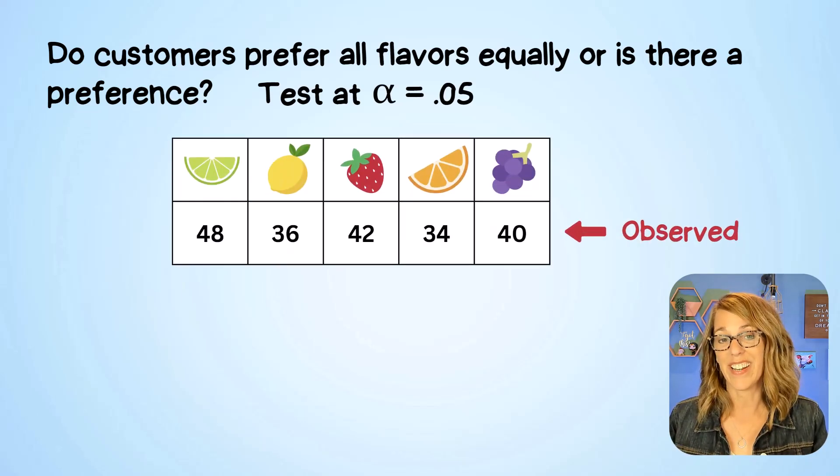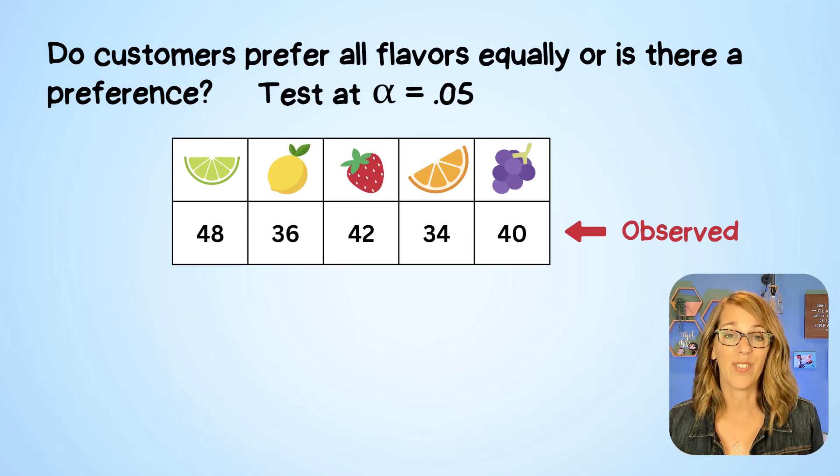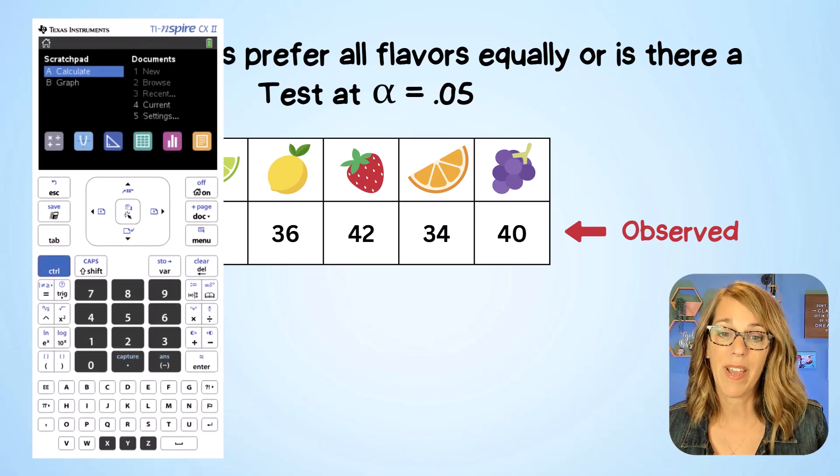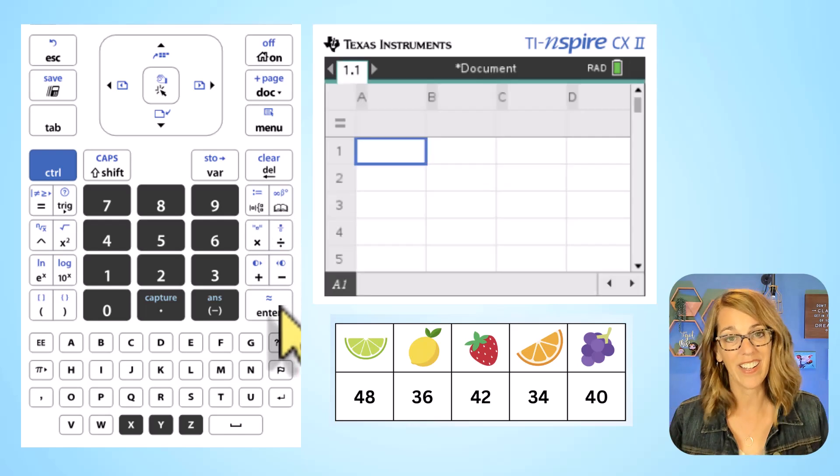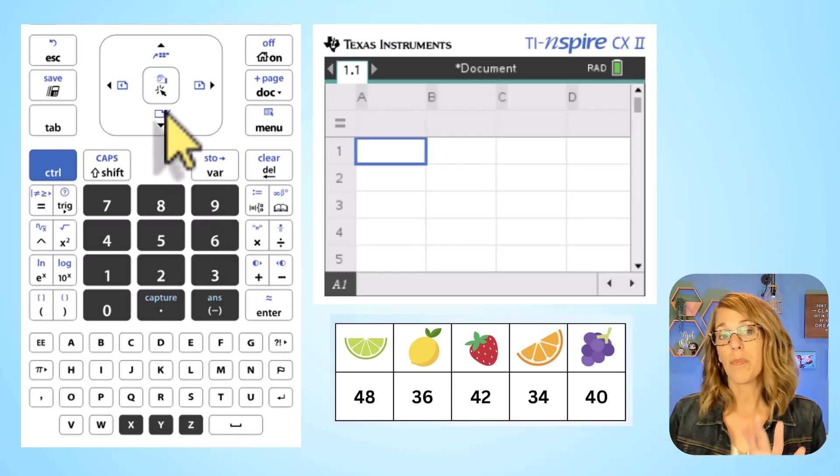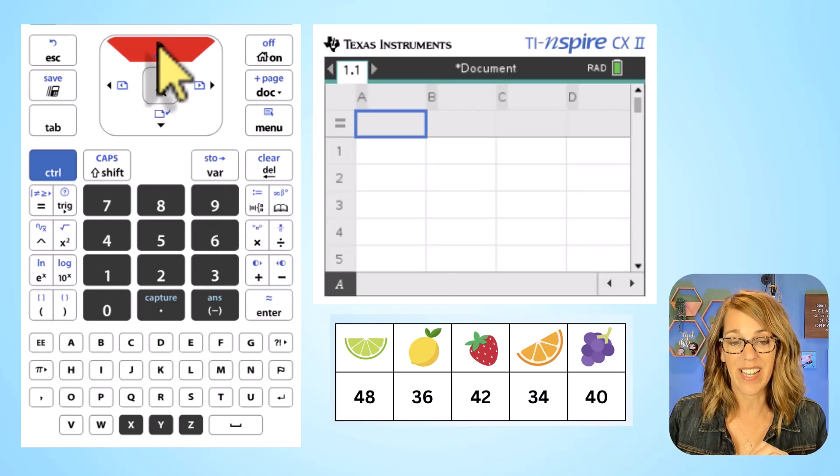Now this is our observed data and we want to start by entering this into the calculator. In the TI-Inspire, I want to navigate down and choose that lists or spreadsheet icon and then hit enter. This was our observed data and they need to give it a name.